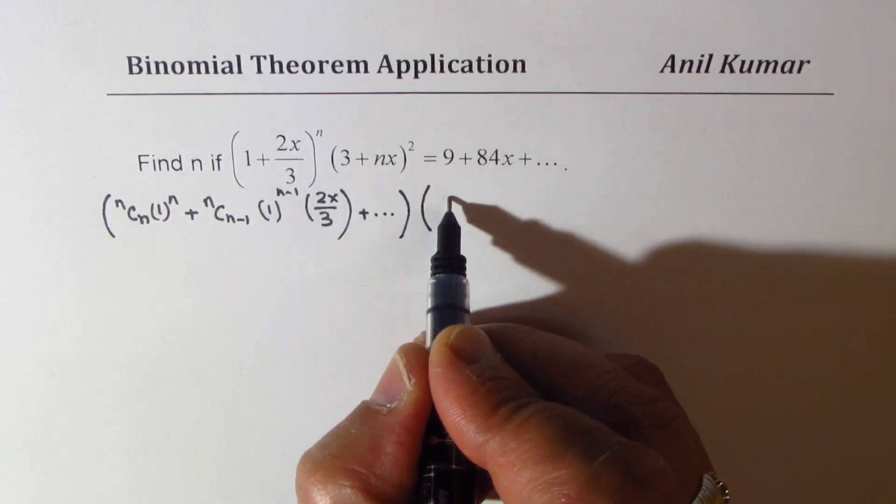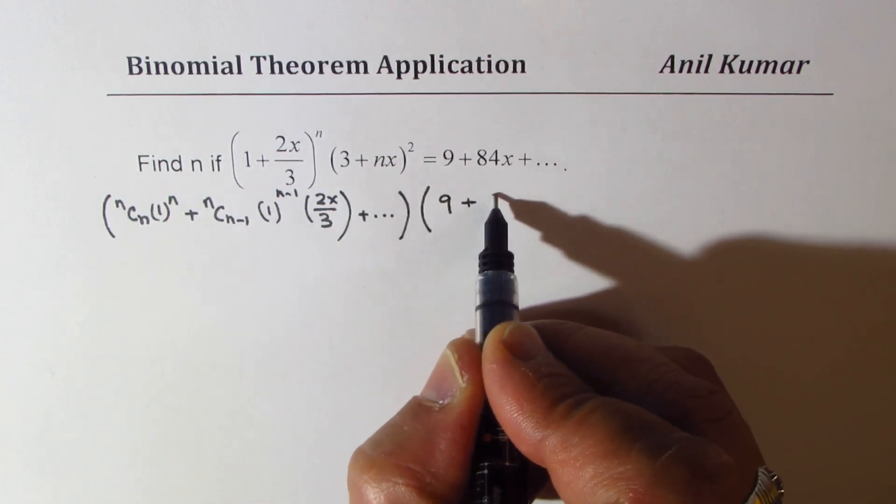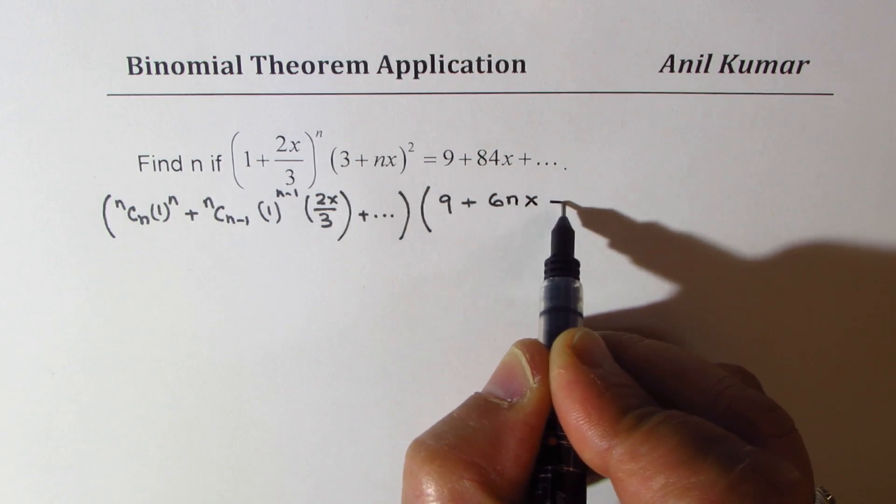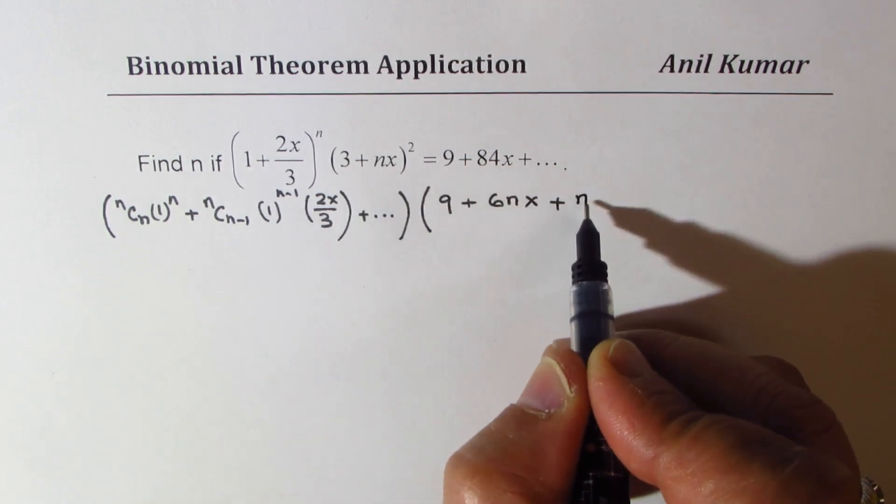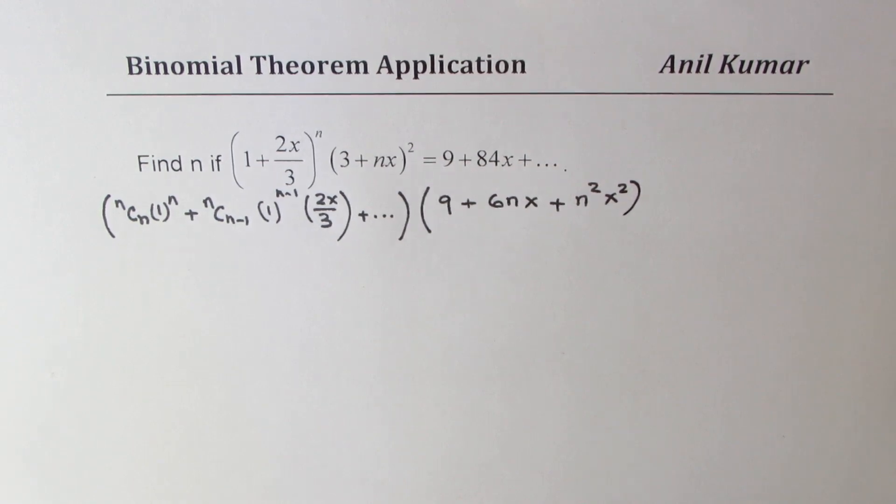Expansion of this gives us 9, square of 3, plus 2ab which is 6nx plus square of that which is n^2 x^2. Now let's expand.